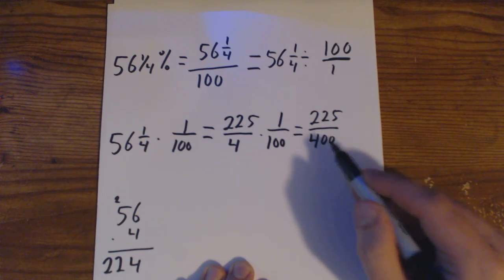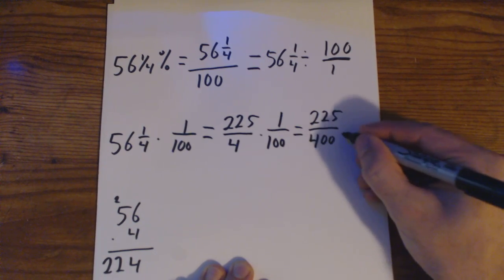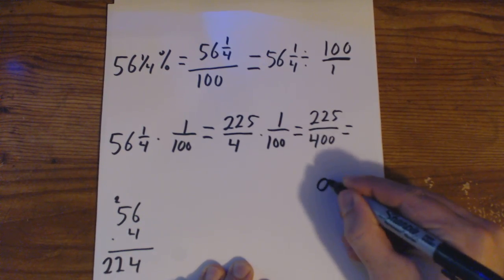So if we divide each of these by 25, 225 divided by 25 we're going to get, bring it down here, 9.